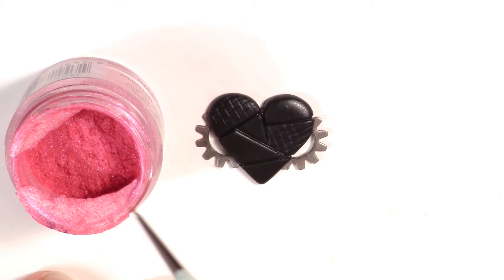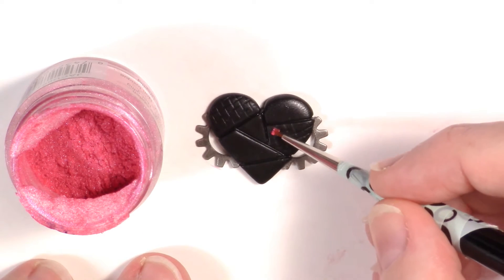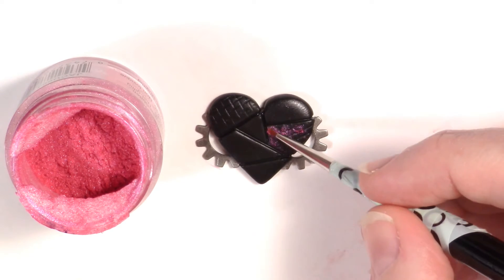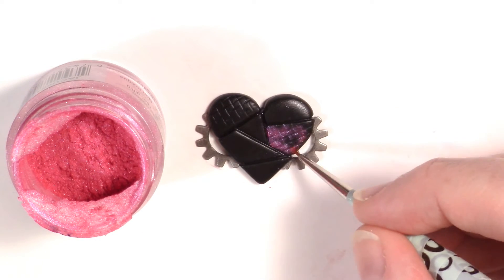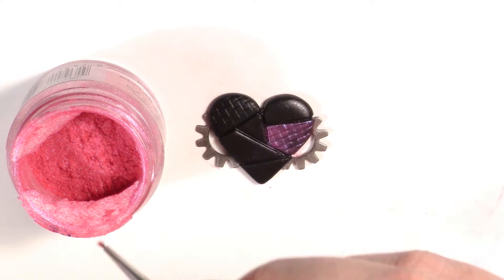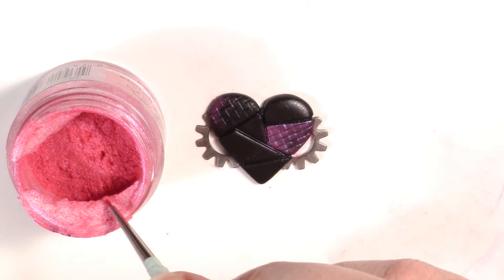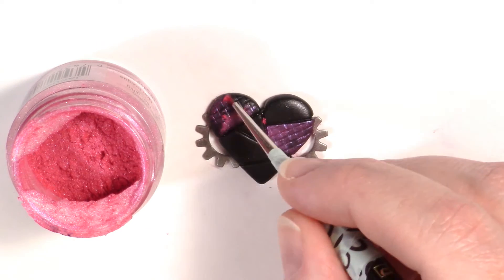Now, pick out what mica powder you want to use first and take your paintbrush and start adding it to the sections you want that color. It's best to take your time with this step. You want to keep in the sections the best you can so the lines stay black in between each section.